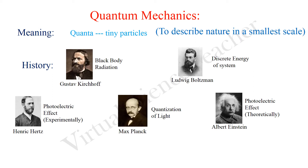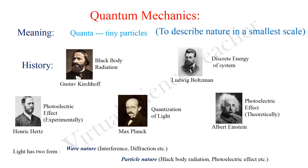Light may be of two forms. One is wave nature, by which interference, diffraction, and polarization can be explained. The other form is particle nature, by which the blackbody radiation problem and the photoelectric effect can be discussed.